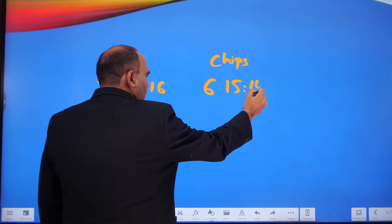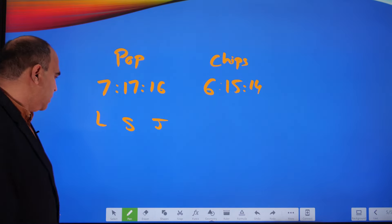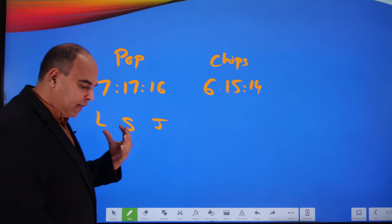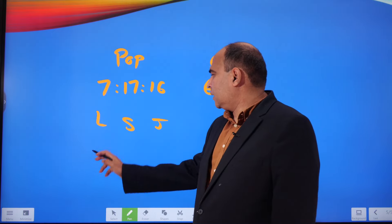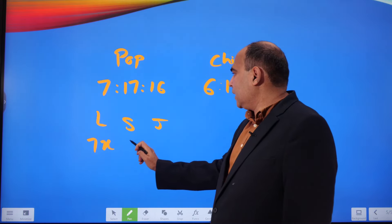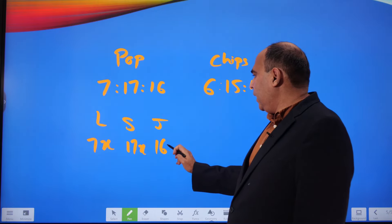If I'm thinking about how many popcorn packets they have, the popcorn packets would be 7x, 17x, and 16x respectively, given the ratio of 7:17:16.